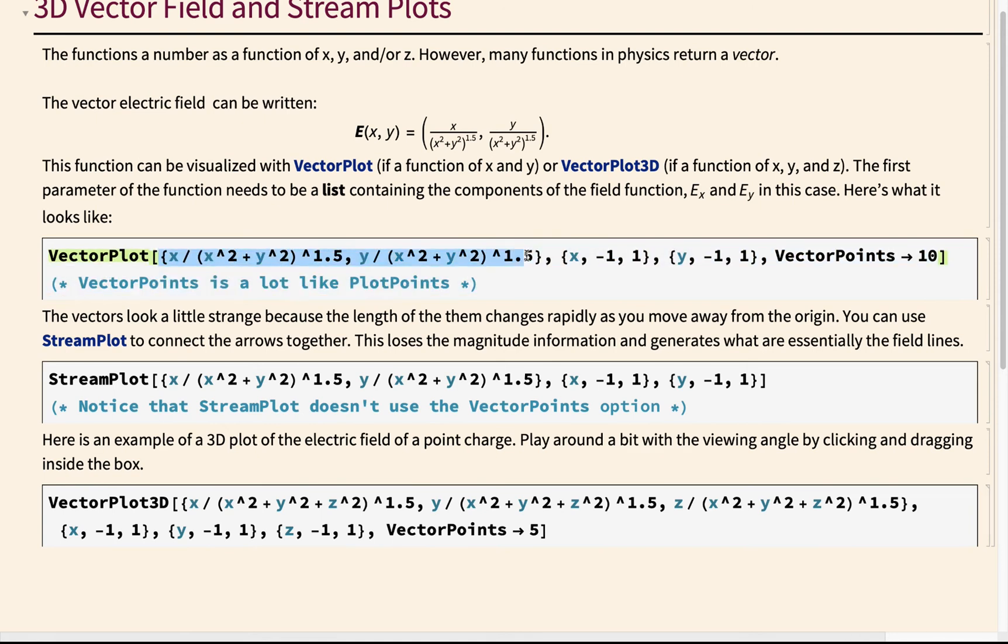Notice here it is expecting a list, and in this case, a two-dimensional list or a list with two items. It's a list because it's in curly brackets here. My list is a function of X and Y. Those are the two things that I'm going to give it the range of afterwards. So I get a comma and then I get the range of X in curly brackets, the range of Y in curly brackets. And this VectorPoints is a lot like PlotPoints, which I showed you guys in the contour video.